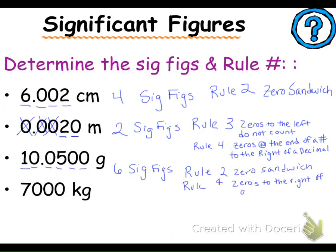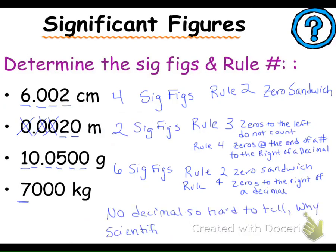On the last one it's actually kind of a trick question because there are no decimal points, so we don't know if those trailing zeros are significant or not. I would have to tell you if there's a decimal point present. Right now without a decimal point I'd say it's only one significant digit, but it's still really vague.